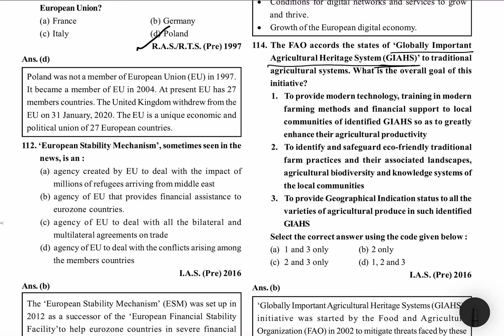The main aim is that it provides modern technology, training, farming methods, and financial support for the local communities — to identify and safeguard the eco-friendly traditional farm practices and their associated landscapes, agricultural biodiversity and knowledge systems of the local communities. The third objective is to provide geographical indication status to the varieties of agricultural produce under such identified GIAS.